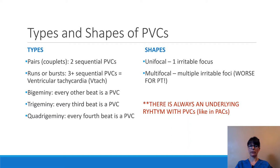PVCs can occur in bigeminy, meaning every other beat is a PVC; trigeminy, meaning every third beat is a PVC; or quadrigeminy, meaning every fourth beat is a PVC. The prefixes of these words indicate how many beats the PVC skips.